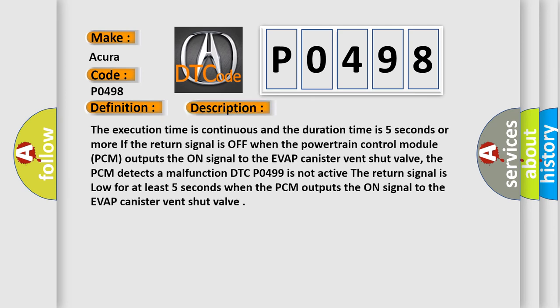The execution time is continuous and the duration time is five seconds or more if the return signal is off. When the powertrain control module PCM outputs the on signal to the EVAP canister vent shut valve, the PCM detects a malfunction. DTC P0499 is not active. If the return signal is low for at least five seconds when the PCM outputs the on signal to the EVAP canister vent shut valve.